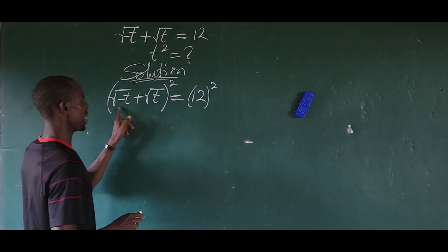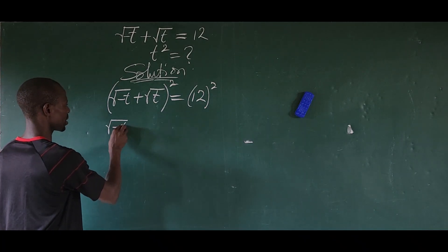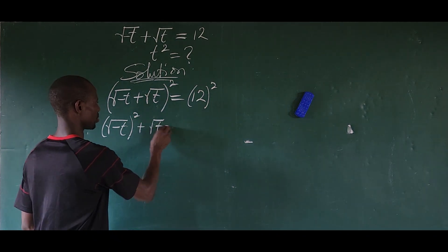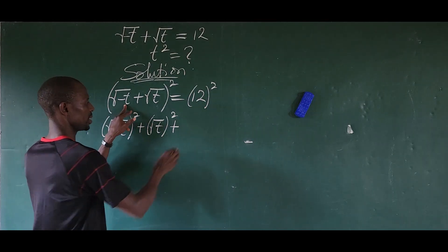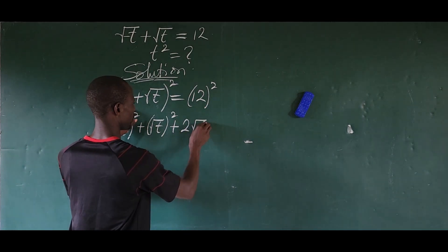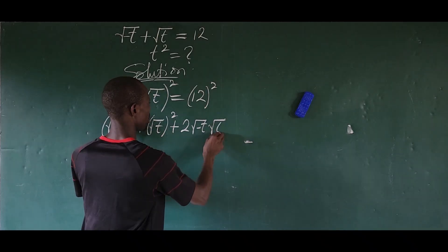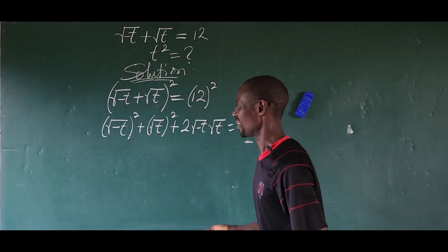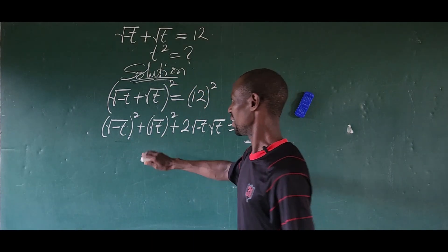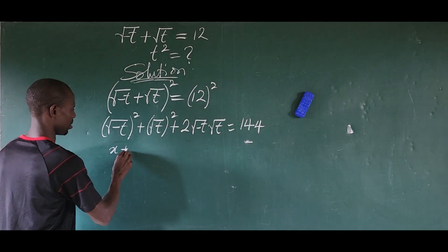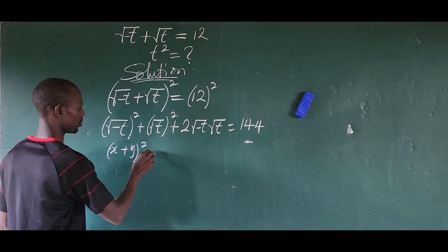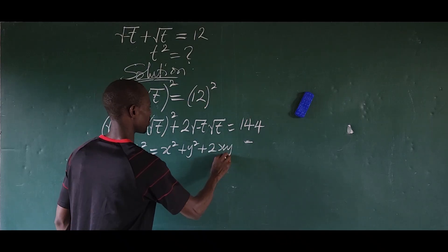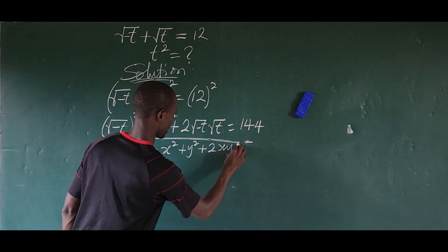So if we do this, this is going to give us the square root of minus t all raised to the power of 2, plus the square root of t all to the power of 2, then plus 2 of square root of minus t times the square root of t, everything equal to 144. I just applied a law here: if you have x plus y all raised to the power of 2, this is equal to x to the power of 2 plus y to the power of 2 plus 2xy.